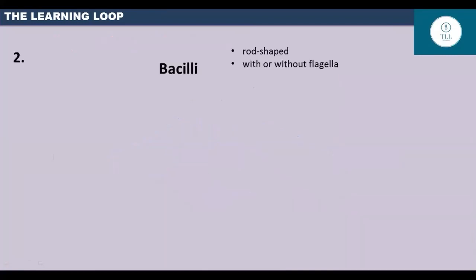Coming on to bacilli, these are rod-shaped bacteria which are maybe present with or without flagella. Now, based on the arrangement of these rod-shaped cells, they are also classified into various types.